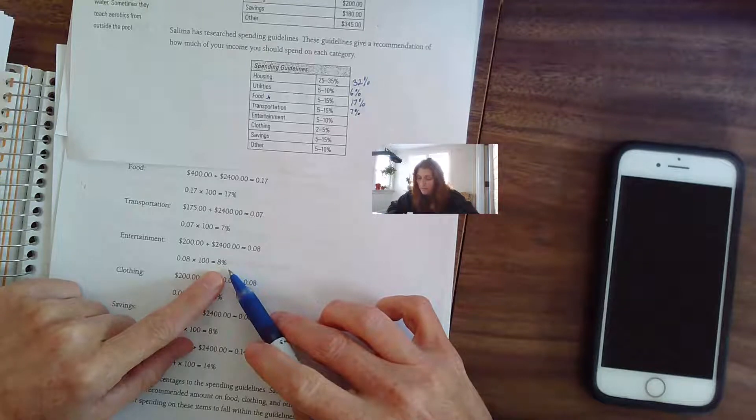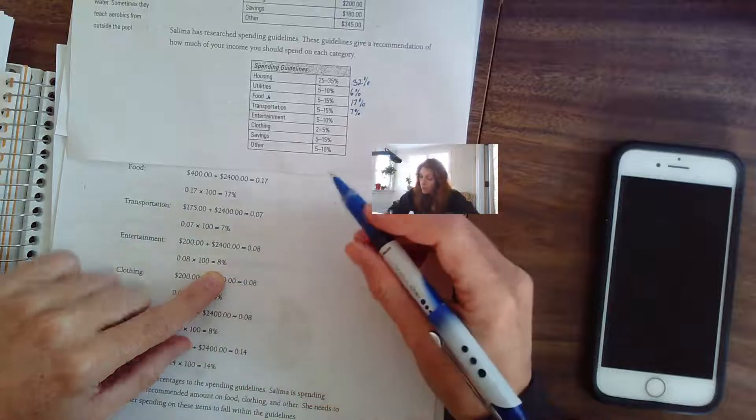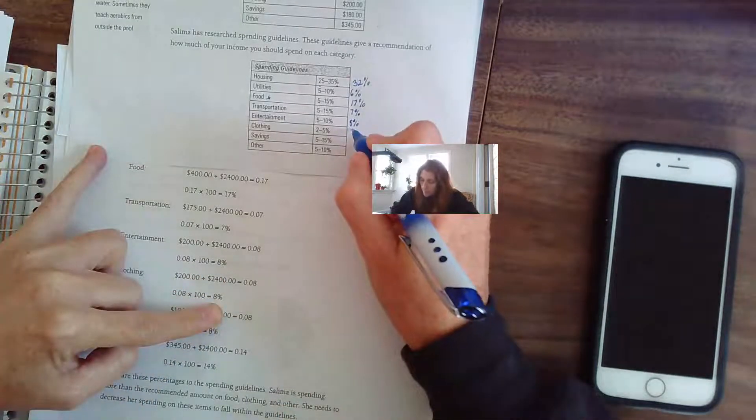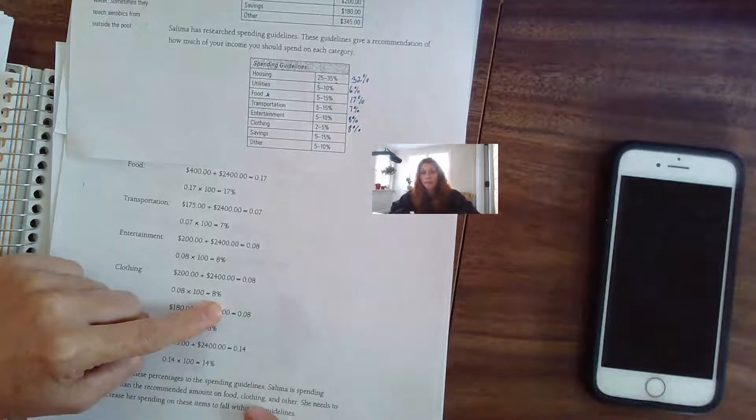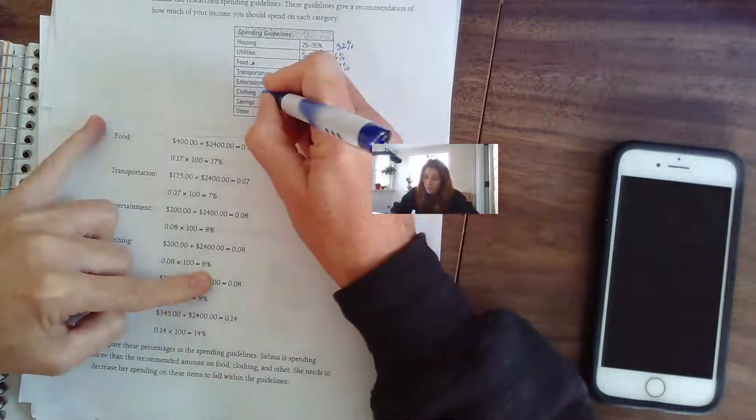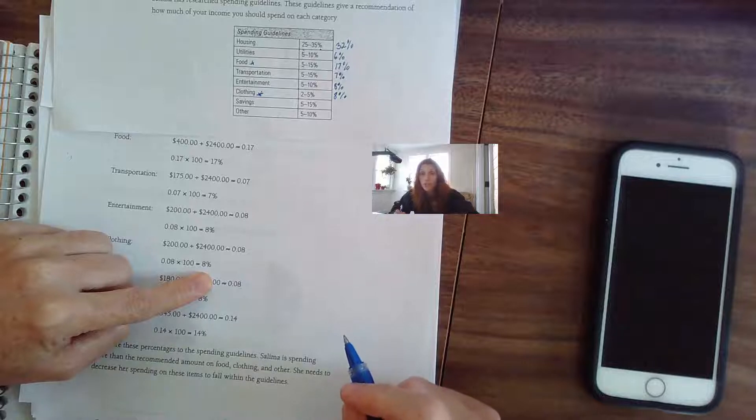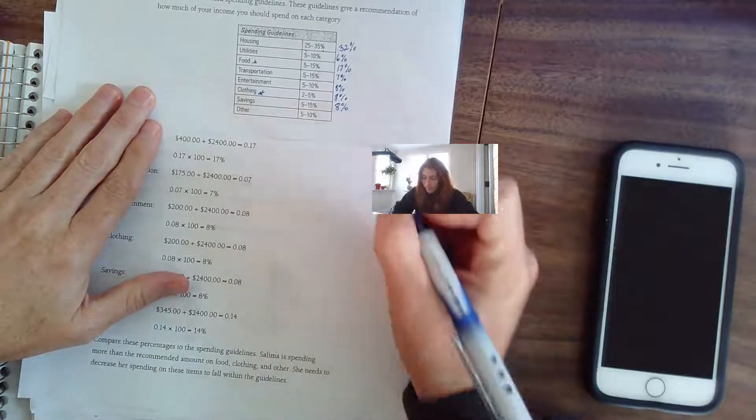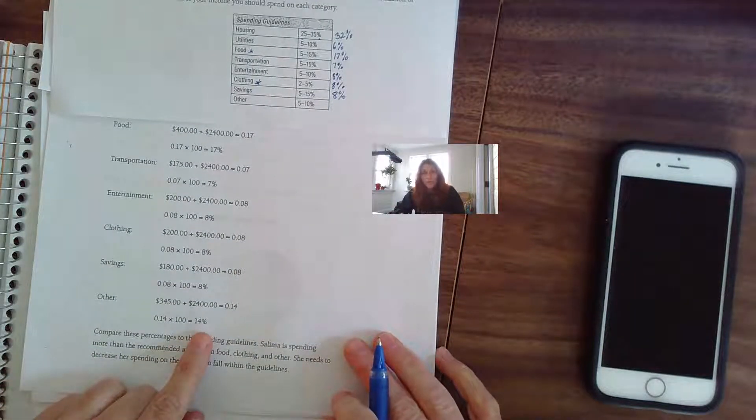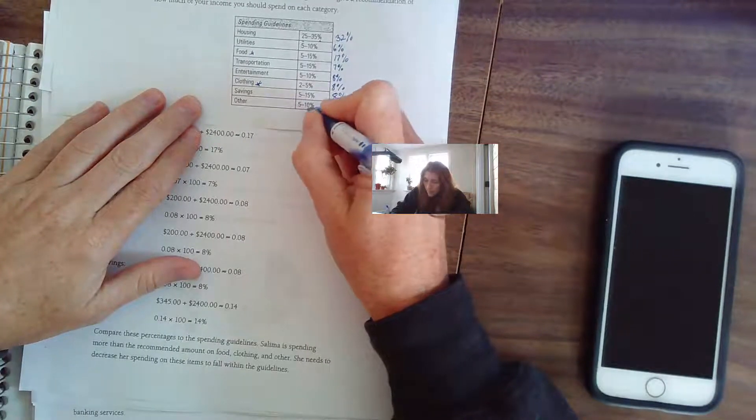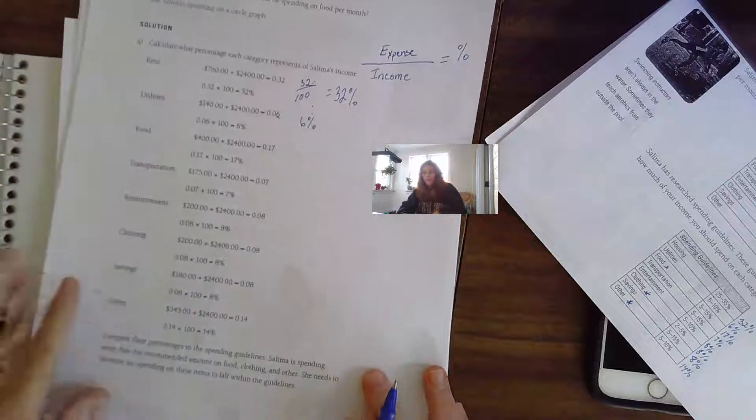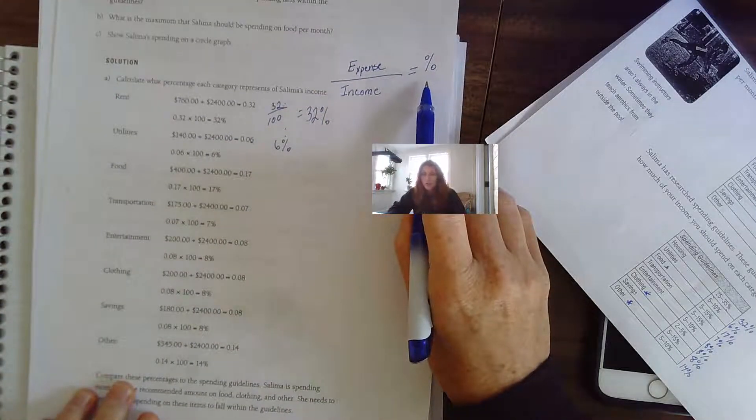Entertainment—she spent 8% of her income on entertainment, so that one falls in the guidelines. Clothing, she spent 8% of her income on clothing. She's spending a little bit too much money on clothing. That's somewhere she could save some money. Savings, she saved 8%, so she's within the guidelines for savings. And other, she has 14%. The guidelines say 5% to 10%, yet she was putting 14% towards other, which must be, I'm assuming, like unexpected costs.